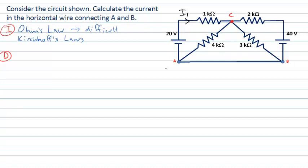It doesn't really matter what direction we choose, although here I'm guessing that because this is the high potential side of the 20V source, a current might be going in that direction. So anywhere between A and C along this path — up through the 20V source, across through the 1 kΩ resistor — will be the same current I1. Coming down from C to A along this other direction, I'll call that current I2. I'll also label the current coming up through the 40V potential there as I3.